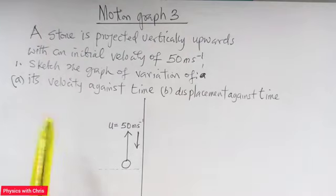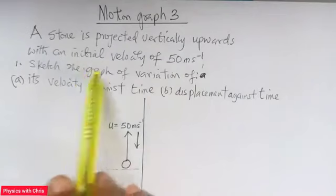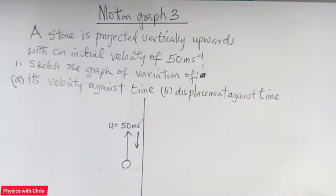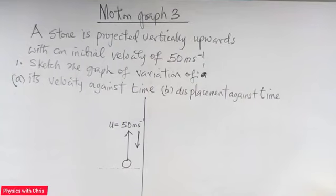A stone is projected vertically upwards with an initial velocity of 50 meters per second. The question asks us to sketch the graph of the variation of its velocity with time and also the displacement against time.